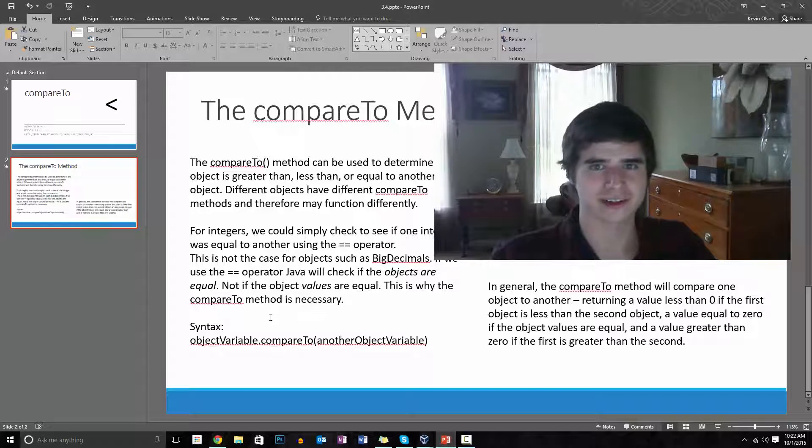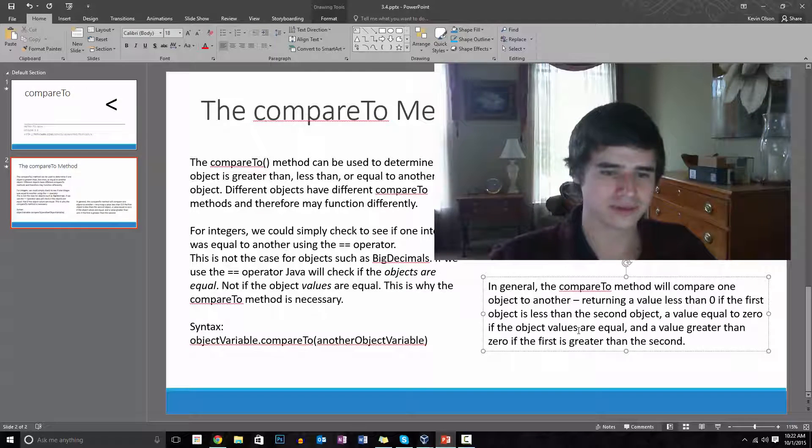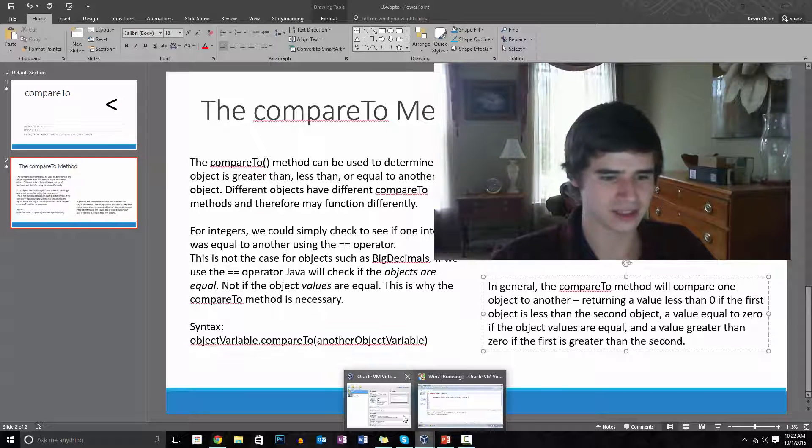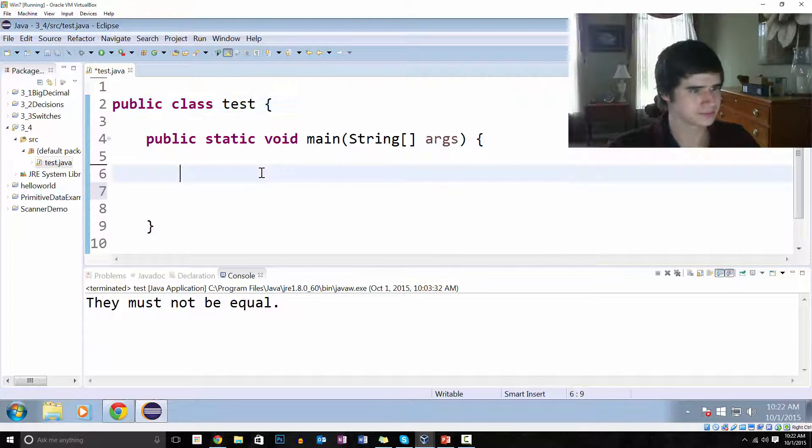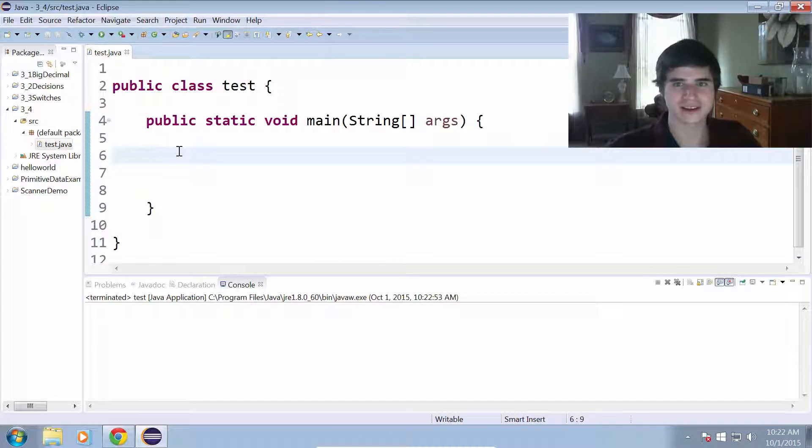But many other objects will return some other number that's not just going to be a solid negative 1 or positive 1. It'll return something like, for example, with strings, it might return the difference in lengths of the string and things like that. But the return value of equal to zero is always pretty much the case when the objects are equal. So without further ado, let's get Eclipse up and running here, and I will show you how this all works.